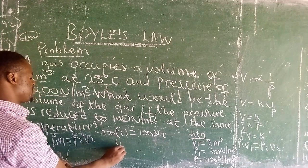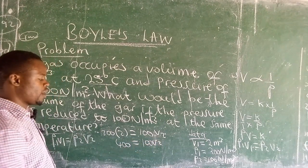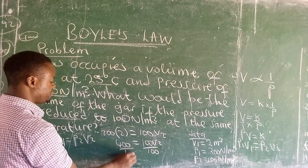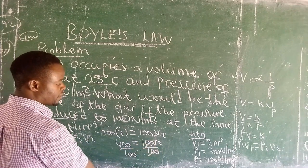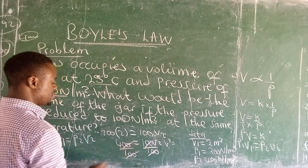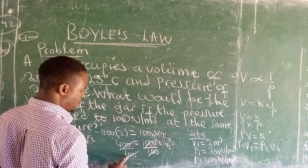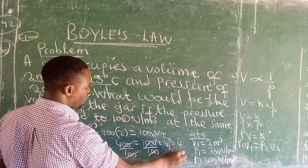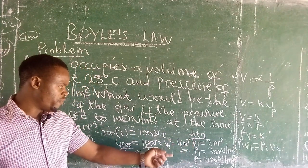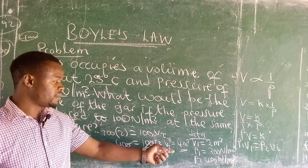So 200 times 2 gives us 400, which is equal to 100 times v2. Our interest is to know the value of v2. Dividing both sides by 100, the 100s cancel out, and v2 is equal to 4 cubic meters. So we have found the value of the secondary volume.